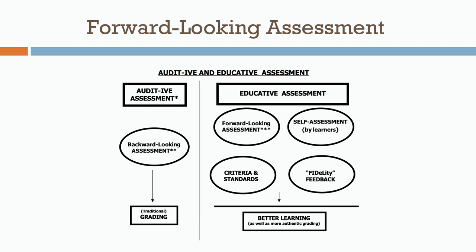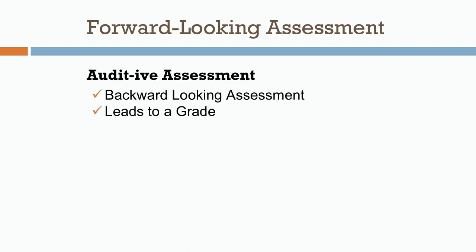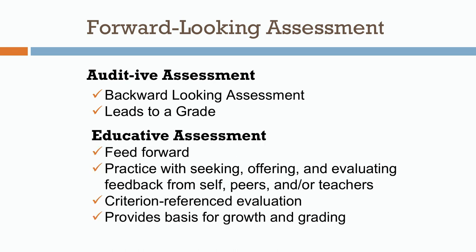Educative assessment also includes self-assessment, where learners look at how they've done in particular assignments — what have they learned, could they have changed their learning practices, did they gain new strategies? Educative assessment also reminds teachers that feedback includes several factors and not just the grade. Aspects of forward-looking assessment compared to auditive assessment are these: it feeds forward; it engages students in practice with seeking, offering, and evaluating feedback — whether from themselves, peers, or teachers. Educative assessment is criterion-referenced whenever possible, and when criteria are set, these are shared with students through rubrics, descriptions, and aims. In all, educative assessment is meant to provide a basis for both growth and grading.